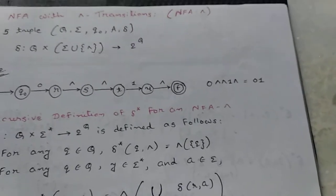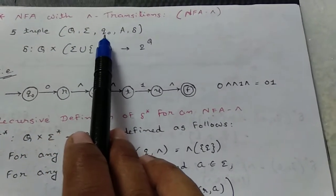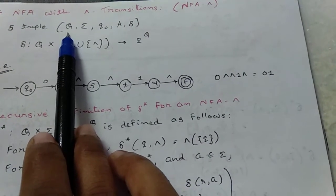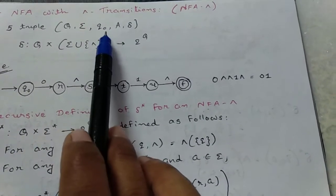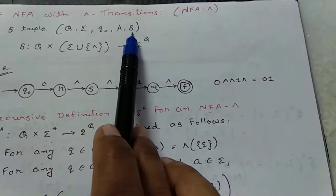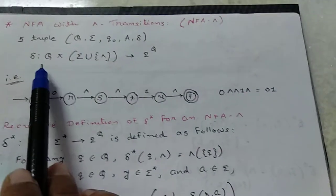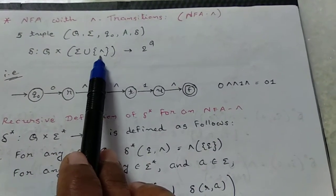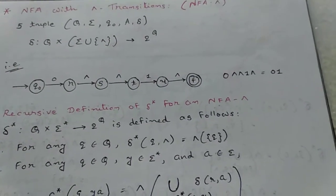A finite state machine is defined with a five-tuple: Q, sigma, q0, A, delta. Here Q is a set of all states, sigma is a set of input symbols, q0 is the initial state, A is the set of final states, and delta is the transition function. For NFA epsilon, the transition function delta is Q cross sigma union epsilon, which gives two power Q.